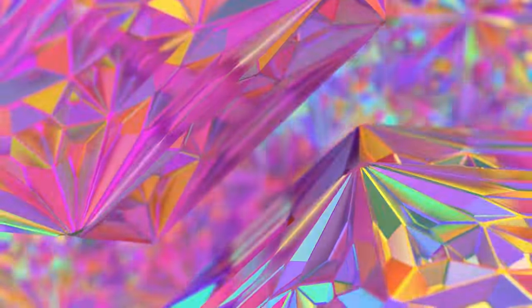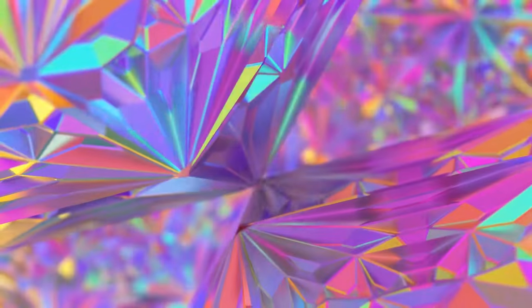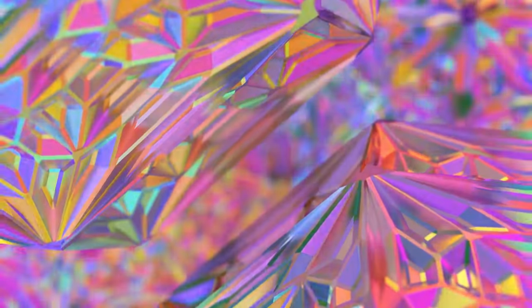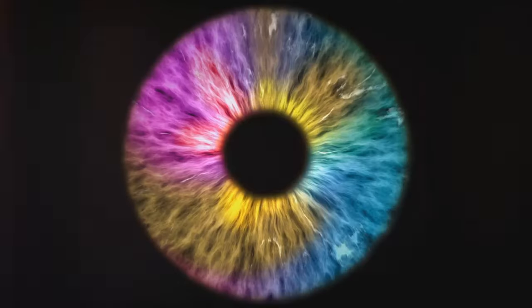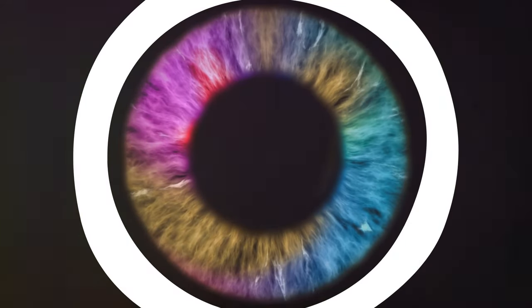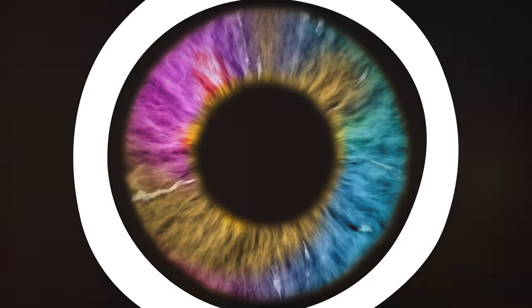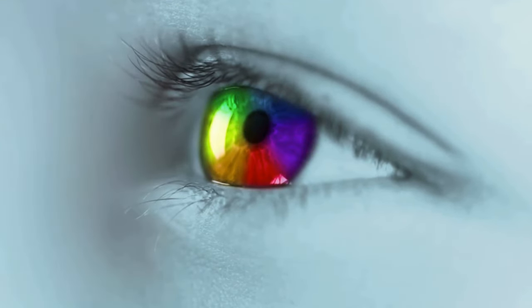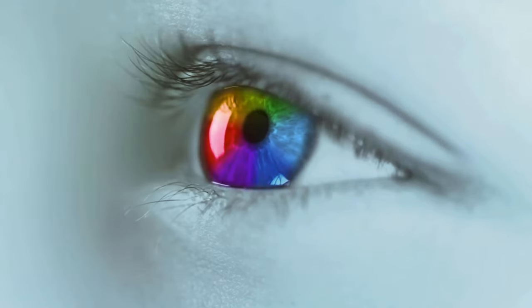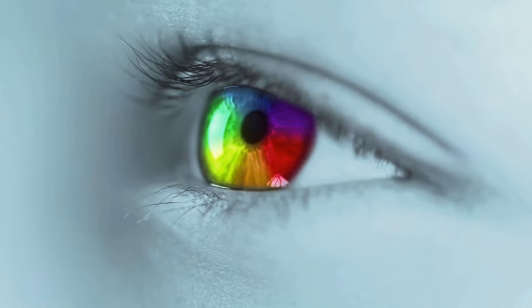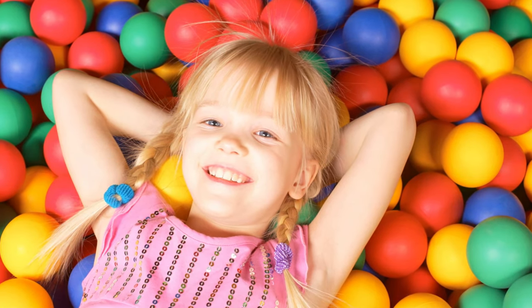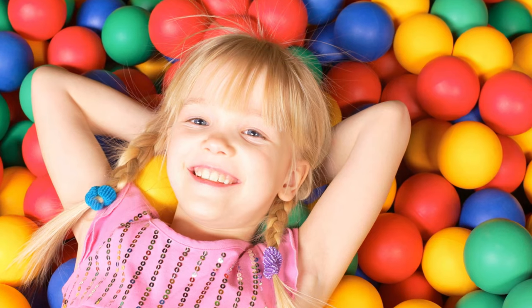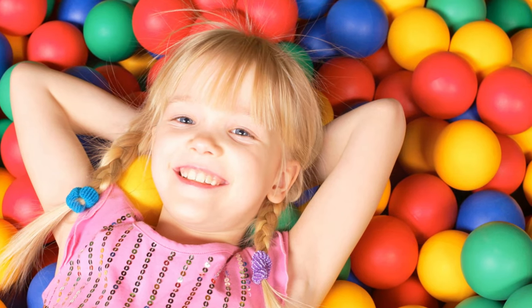Now here's another mind-boggling fact. Your eyes have the extraordinary ability to distinguish between millions of different color shades. Yes, you heard that right, millions. This is thanks to the cone cells in your eyes. There are three types of these cells, each sensitive to different wavelengths of light. These wavelengths correspond to the colors red, green, and blue. It's a bit like the pixels on your computer screen. By combining these primary colors, your eyes can perceive an almost infinite range of hues, creating a vibrant world of color.